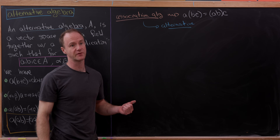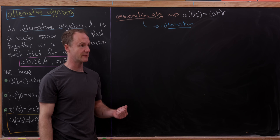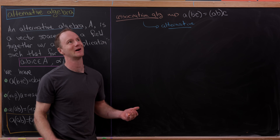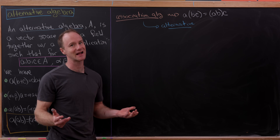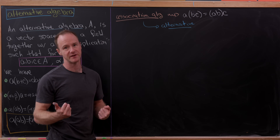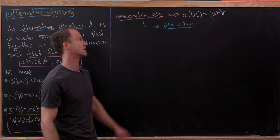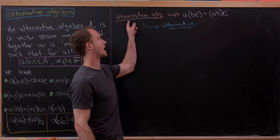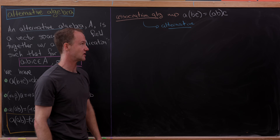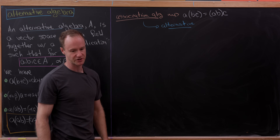This is not true for all non-associative algebras. For instance, every associative algebra is not a Lie algebra — well, it kind of is, but you have to define a new product known as the commutator. Here, every associative algebra is an alternative algebra with the same multiplication.